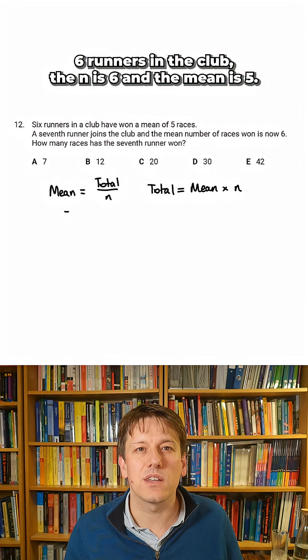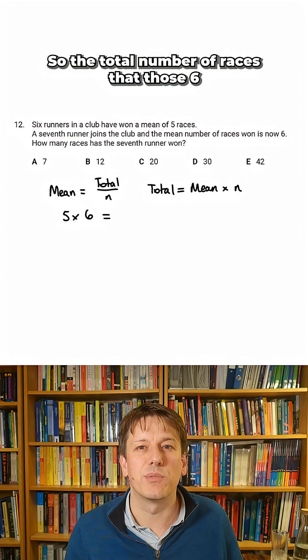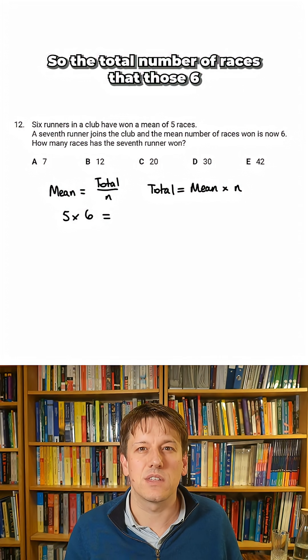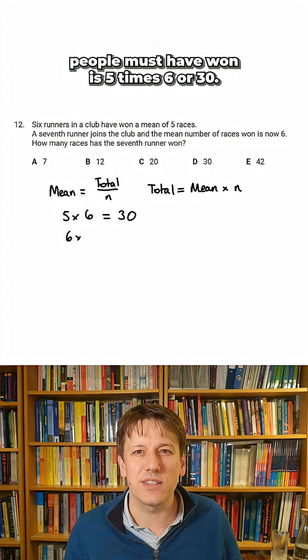So when there are only six runners in the club, the n is six and the mean is five, so the total number of races that those six people must have won is five times six, or 30.